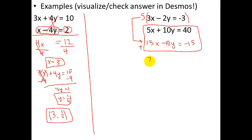5x plus 15x is 20x. 10y and negative 10y cancel out. 40 minus 15 is 25. Divide both sides by 20. And I get x equals 25 over 20 is 1.25 or 5 fourths or 1 and a quarter, anything like that.